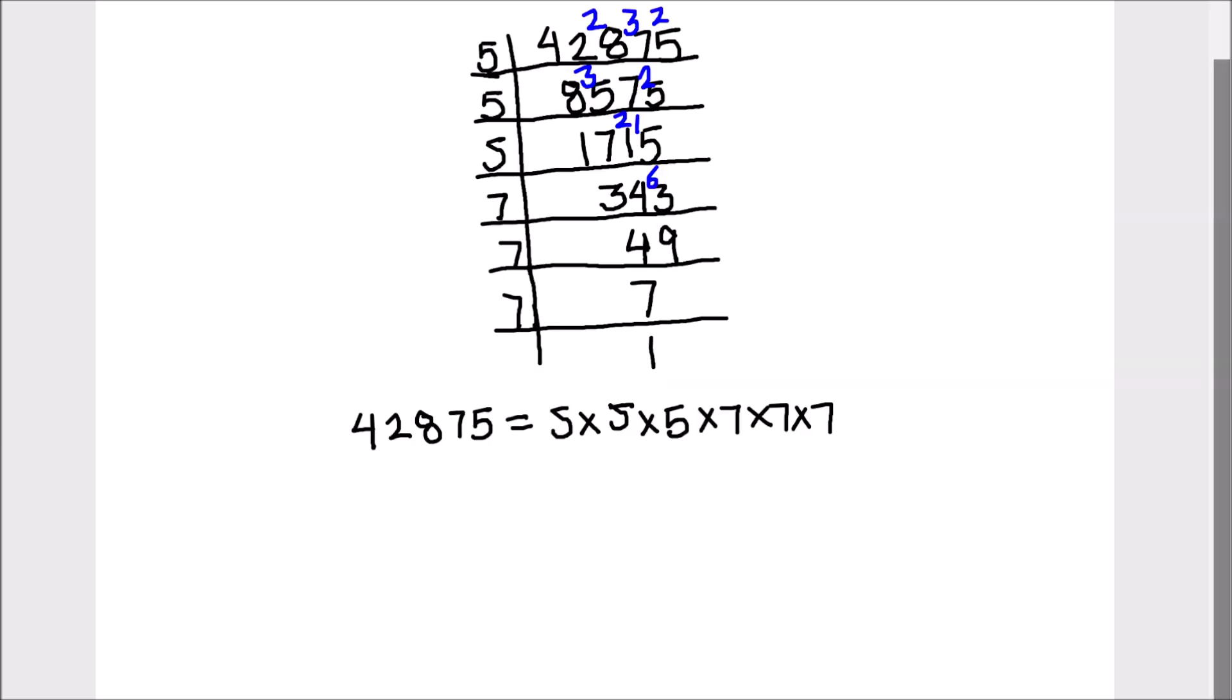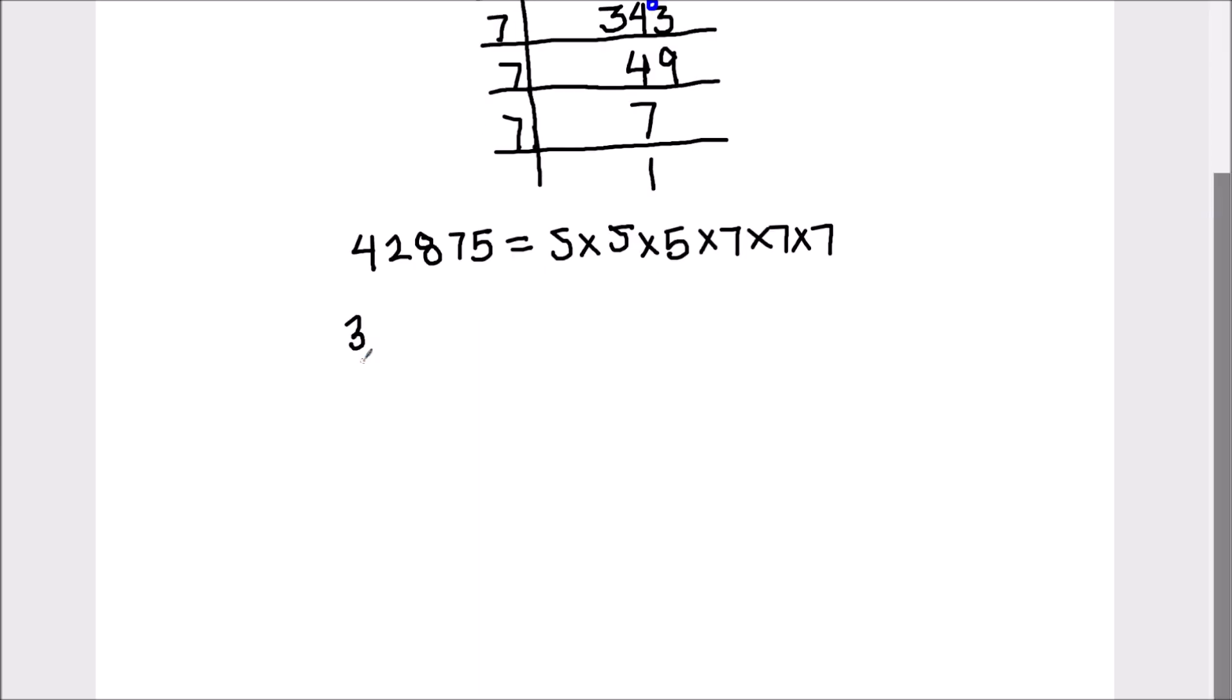To find the cube root, we are going to take the cube root on both sides. Cube root of 42,875 equals cube root of 5 times 5 times 5 times 7 times 7 times 7.